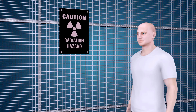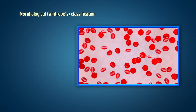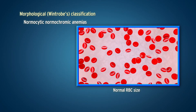Morphological classification, also called Wintrobe's classification, includes normocytic normochromic anemia, where there is normal RBC size and normal hemoglobin content. An example is acute hemorrhagic anemia.